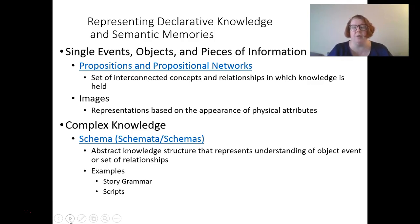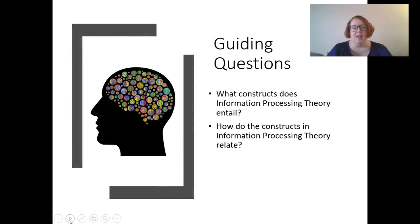Complex knowledge is the schema — an abstract structure that represents an understanding of an object or set of relationships. This is stored in our declarative knowledge and semantic memories. Story grammar, scripts — knowing how a story is set up with a beginning, middle, and end. We all understand how stories go — that's a complex schema we all share. Think about how sensory register, working memory, and long-term memory all relate to each other and contribute to our input and output, how this affects our learning. When you think of information processing theory, you should really be thinking about this computer model of the brain and how it constructs memory through availability of resources, retrieval, and encoding of our memories.